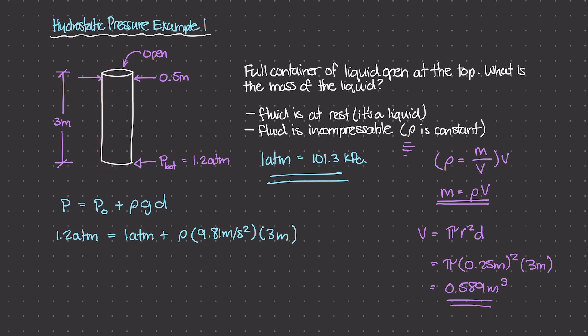So let's go a little bit further. So this 1.2 atm is really just one atmospheric pressure times 1.2, right? So one atmospheric pressure is 101,300 pascals times 1.2, right? And this is equal to 1 atm. Well, 1 atm is 101,300 pascals plus ρ times g, 9.81 meters per second squared times the depth, which is 3 meters.